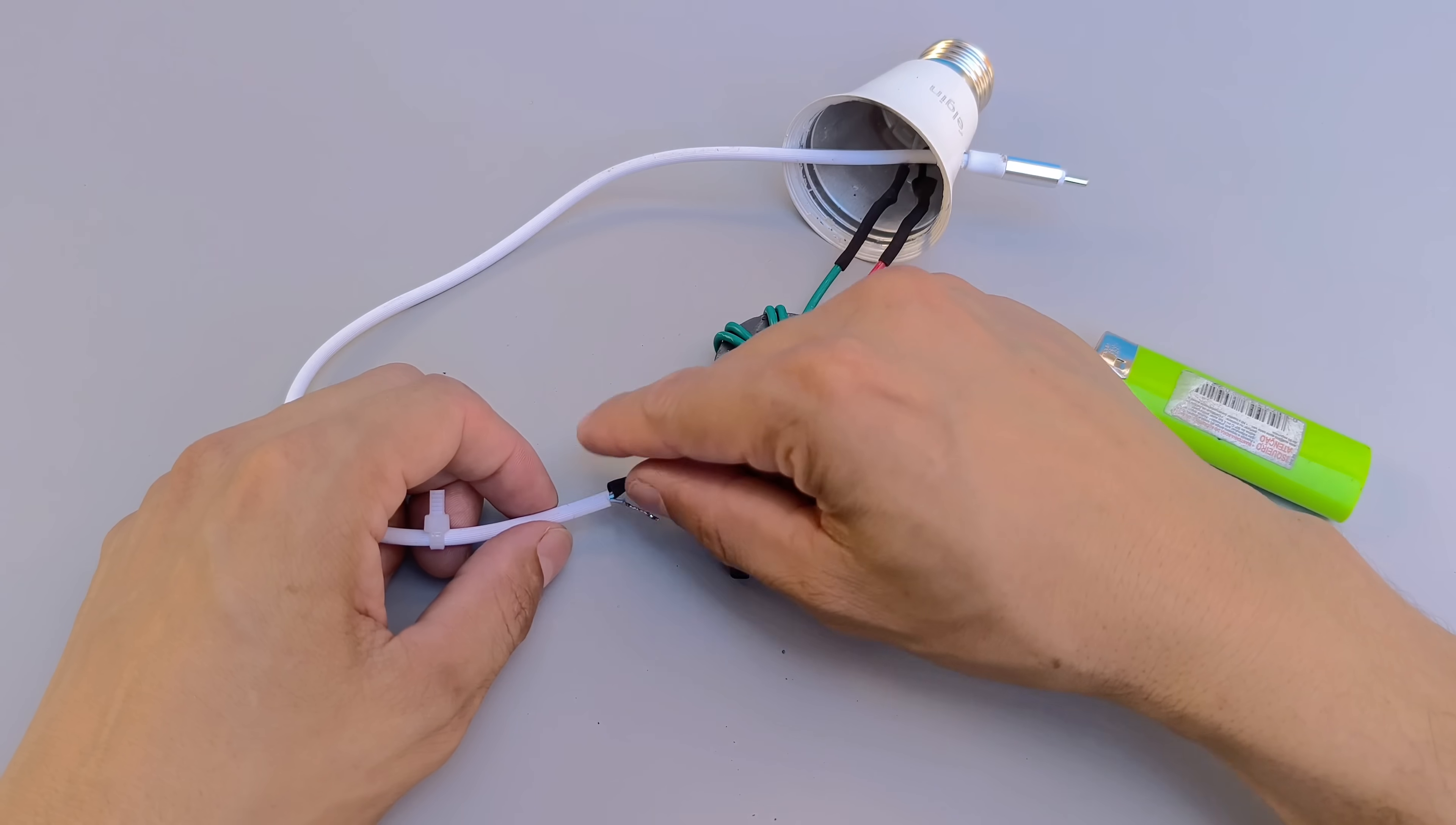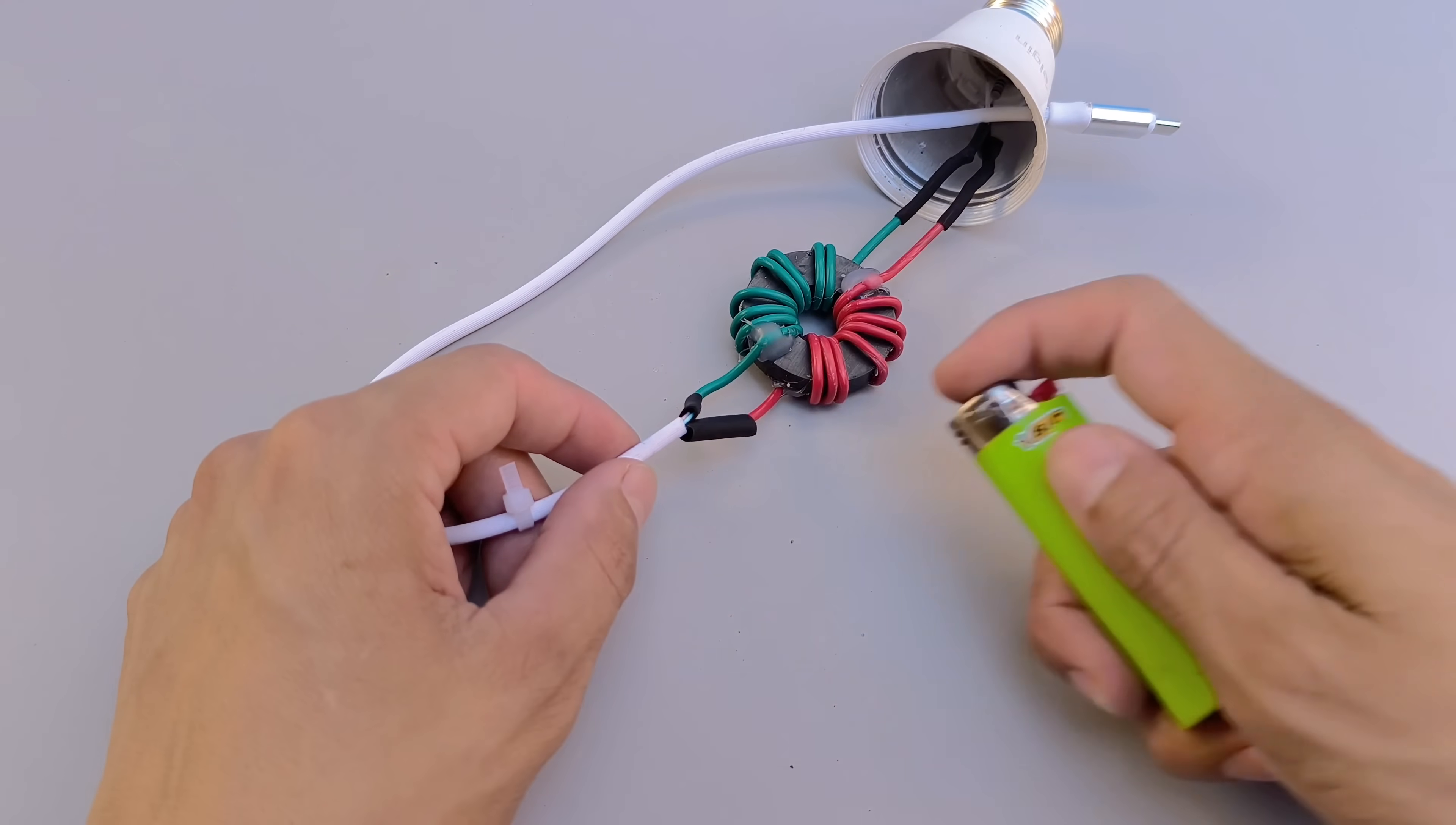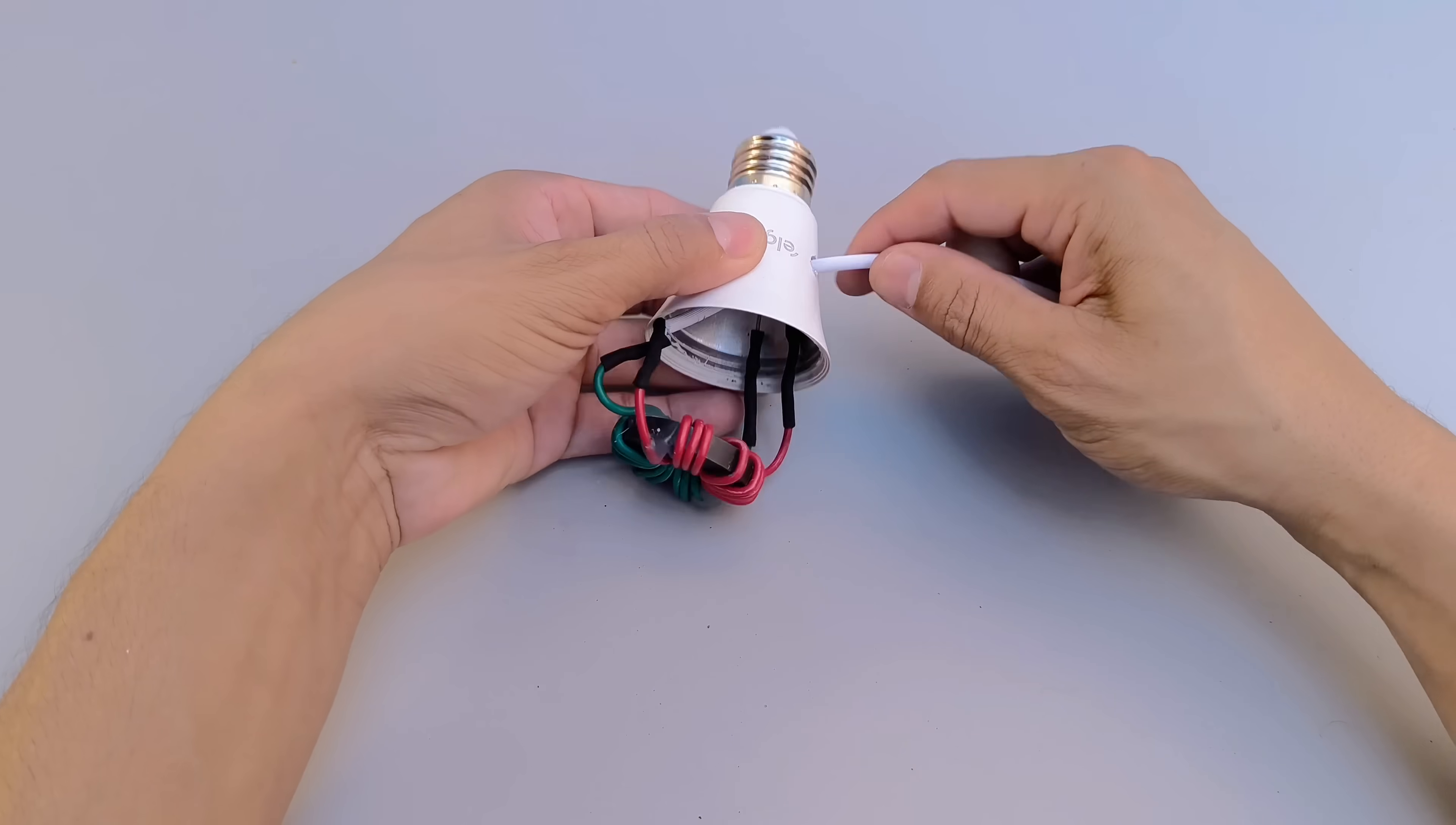If you don't have a soldering iron, you can splice the wires manually. To do this, twist the bare ends of the wires tightly together to ensure good conduction. After splicing, use quality insulating tape to completely wrap the area, preventing contact with other wires and protecting against short circuits. Make sure the splice is firm and secure before turning on the circuit.